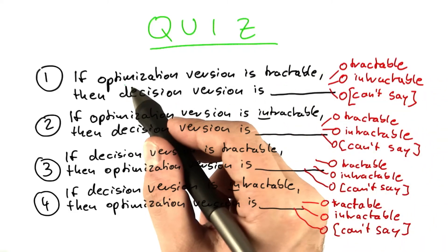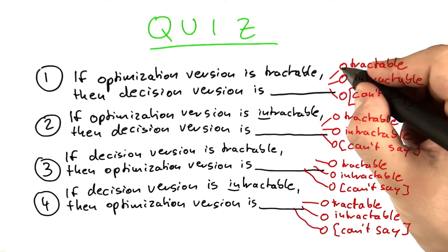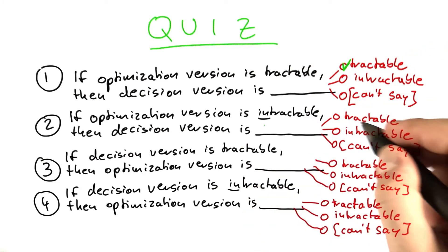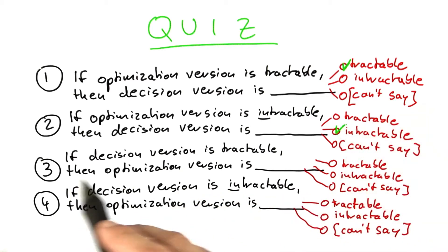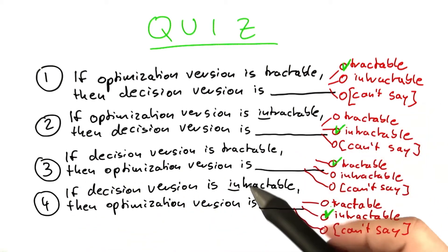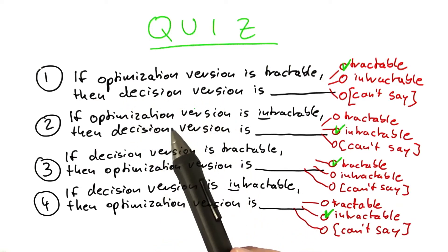The correct answer is: if we know the optimization version to be tractable, then the decision version is also tractable. If we know it to be intractable, then the decision version is also intractable. The same goes if we have information about the decision version. The tractability of an optimization version and of a decision version are closely related.